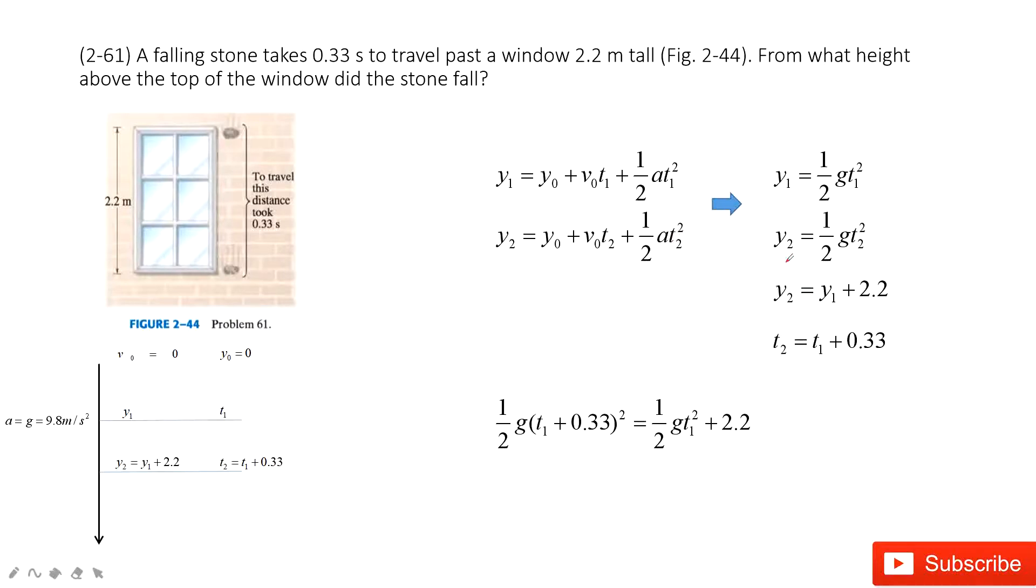We find this one. y2 is one half g t2 squared. t2 we write it as t1 plus 0.33 squared. And then equals the right side is one half g t1 squared.